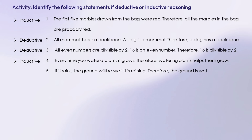Number 5: if it rains, the ground will be wet. It is raining. Therefore, the ground is wet. Answer: deductive reasoning.